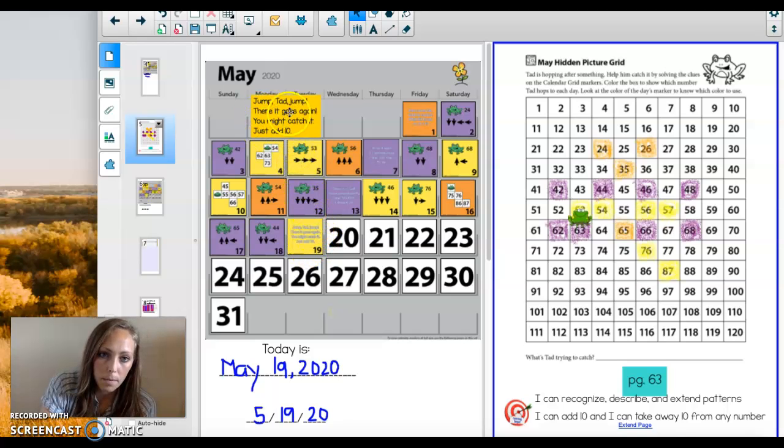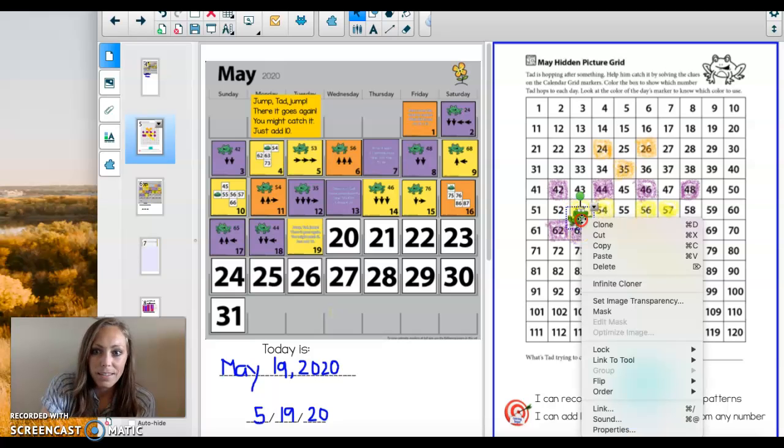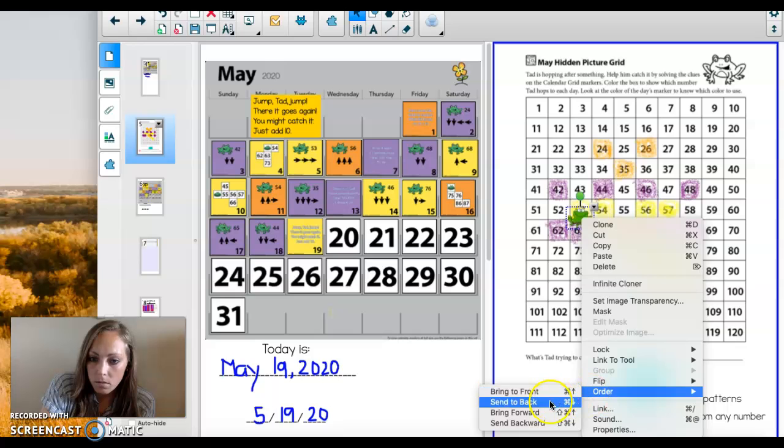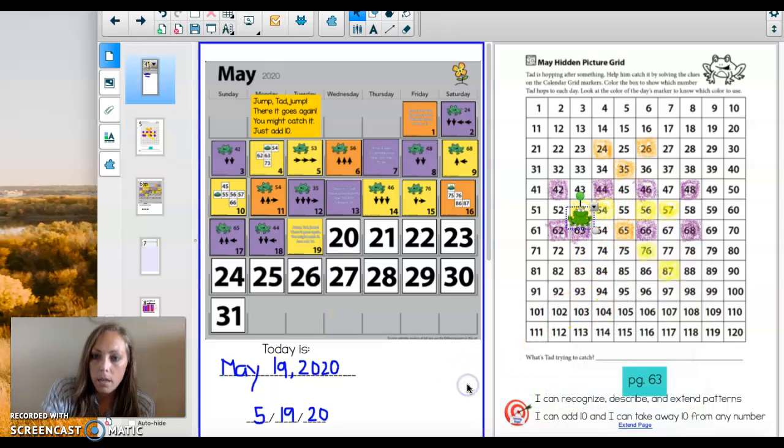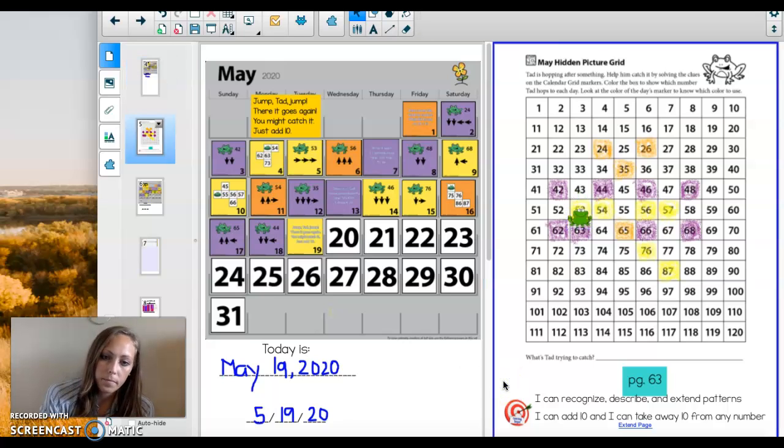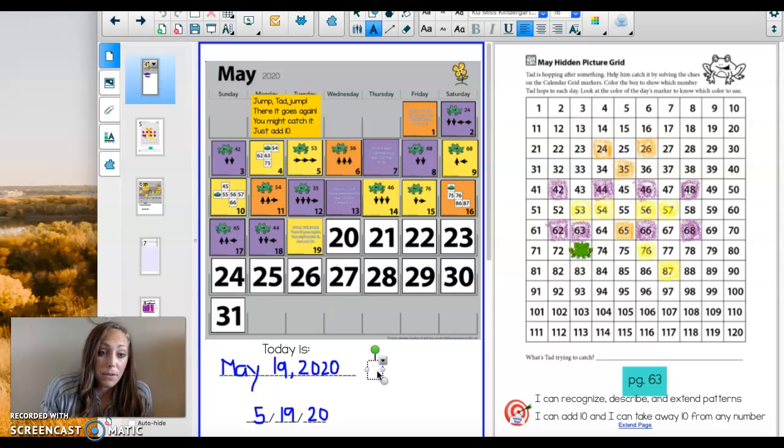So it's this word problem. It says jump Tad jump, you might catch it, just add 10. So I want you to think in your mind, he's on the 63, where will he be when he adds 10? I hope you said 73. Remember moving down on the 120 chart is adding 10. So he moved from the 63 down to the 73. What would the equation for that be?